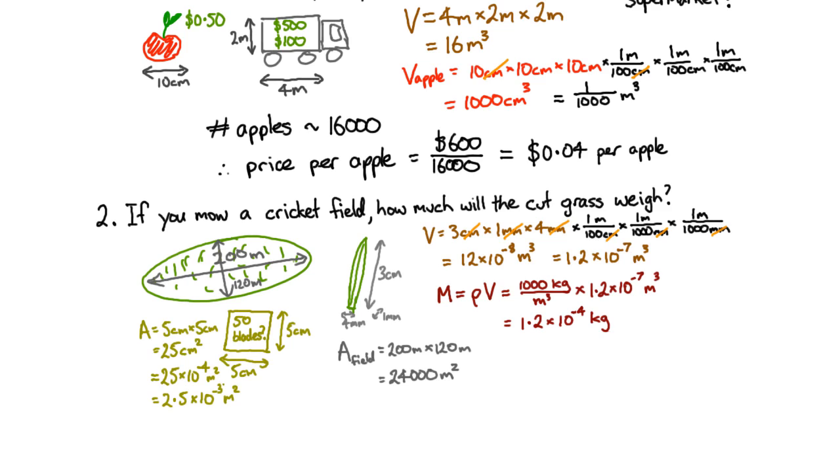So if I have 50 blades of grass in this amount of area, then in that amount of area, I'm going to have a really very large number of blades of grass. And so if I want to find the total mass of those, I simply multiply the number of blades by the mass per blade. So you get 60,000 kilograms, 60 tons of grass.